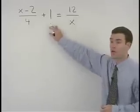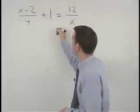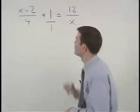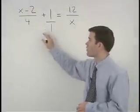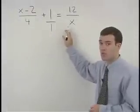Think of the 1 in this problem as 1 over 1. The common denominator for 4, 1, and x is 4x.